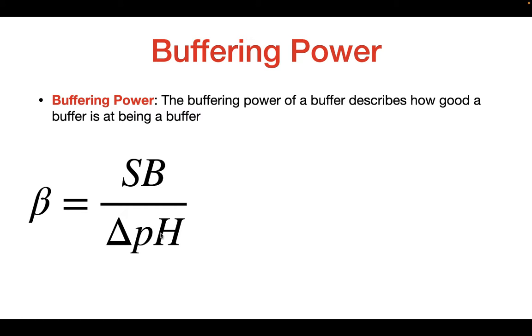In other words, if it takes a greater amount of base in order to increase the pH, this means that you have a greater buffering power. Buffering power is going to differ for buffers depending upon whether it's a closed or open system.